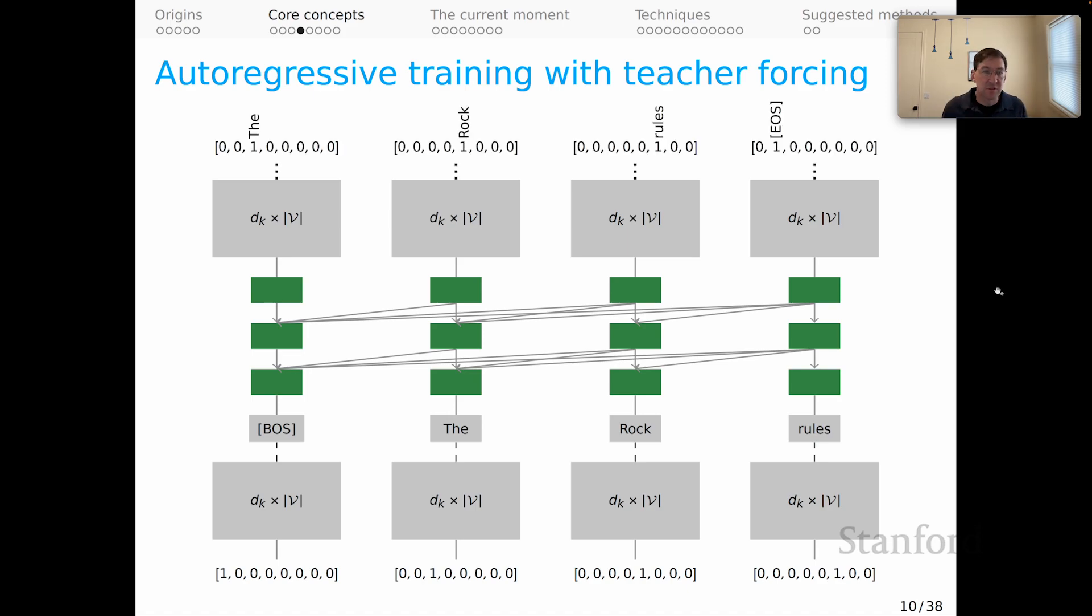The labels, so to speak, are again our sequence offset by one from the sequence that we have at the bottom here. So like this was the start token. We use that to predict the. Then at the next time step, the comes in down here, and that is the basis for predicting rock.